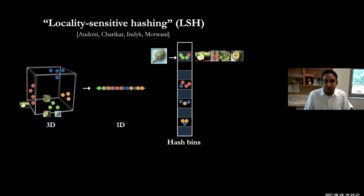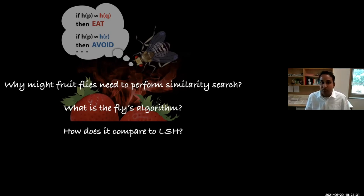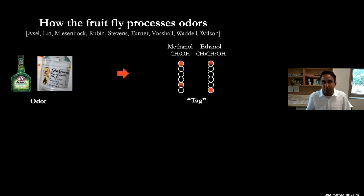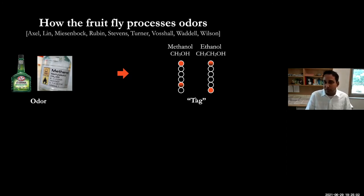Now let's talk about fruit flies. I want to tell you three things: why we think fruit flies need to perform similarity search, what we've learned from the anatomy and physiology of the fly's brain, and how this algorithm compares to what I just described. When a fly smells an odor, there are neurons that fire whenever that odor is smelled — you can think of this as an identifier or tag for that odor.